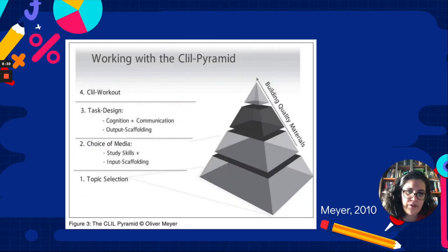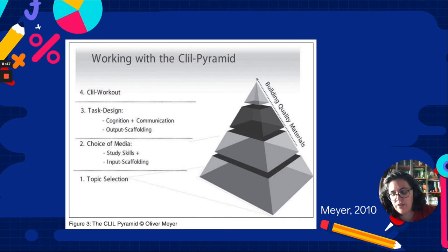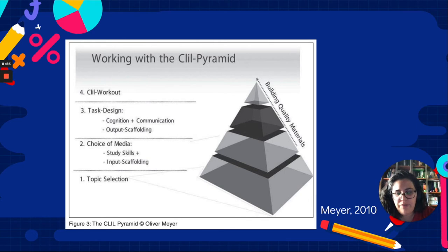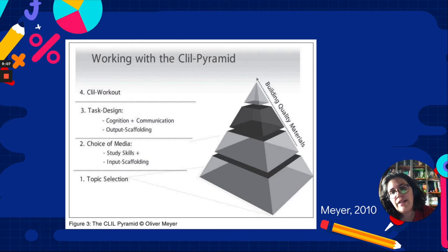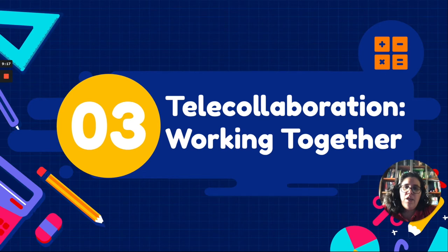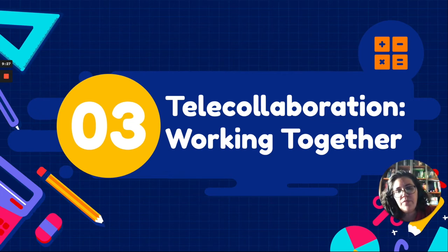In the decade of 2010, Mayer developed the CLIL pyramid, in which he set four steps for creating CLIL materials. First, topic selection, then the choice of media, considering study skills and also input scaffolding. Then the task design, considering cognition, communication and output scaffolding. And finally, the CLIL workout. We need to have some pillars to work from when setting telecollaboration contexts.